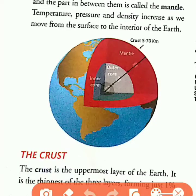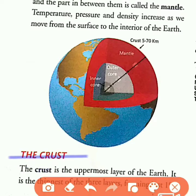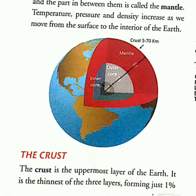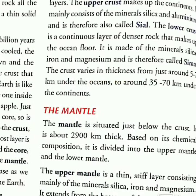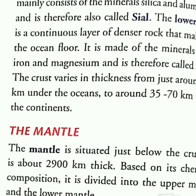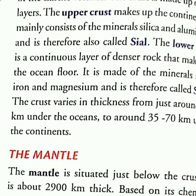The crust is the uppermost layer of the earth and the thinnest among the three layers. The crust is just one percent of the volume of the earth. It itself has two layers: the upper crust and the lower crust. The upper crust is known as sial — it mainly consists of minerals like silica and aluminium. The lower crust is made up of the ocean floor; it is a continuous layer of denser rock and is also known as sima.